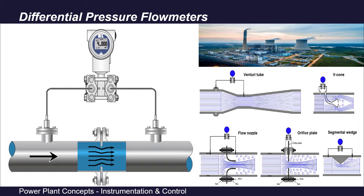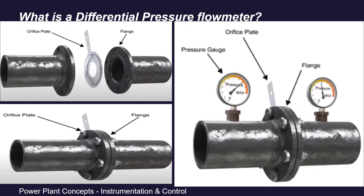Hello friends, a warm welcome to yet another interesting session on instrumentation and control in power plant industries. Our today's topic of discussion is differential pressure flow meters, also called differential flow meters or DP flow meters. We will discuss what they are, how they work, their basic principle, different parts, types used in industry, their applications, advantages, disadvantages, and much more.